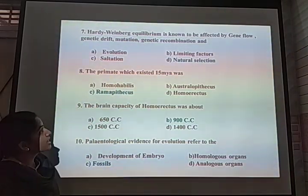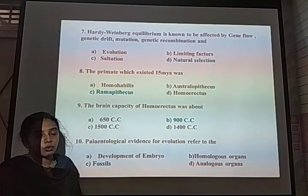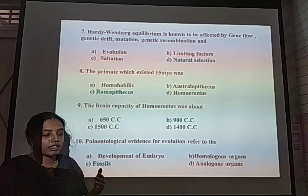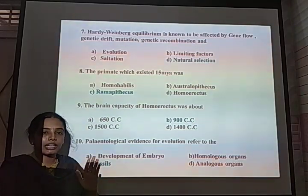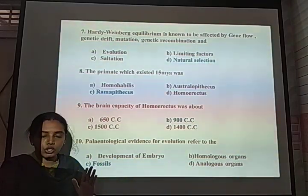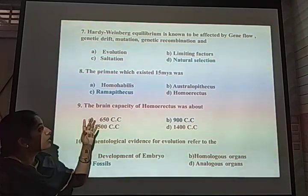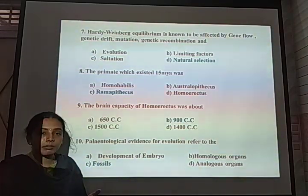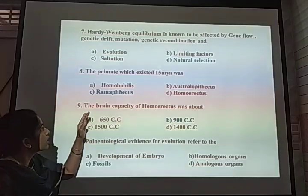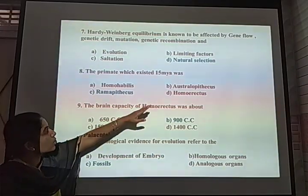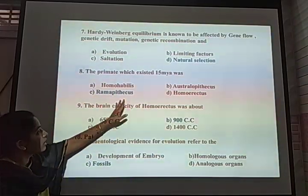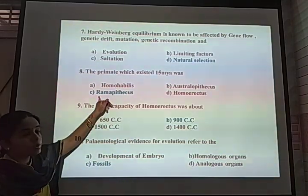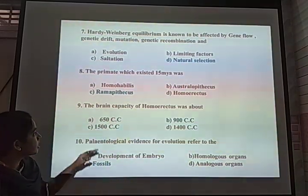Next MCQ: Which primate existed 15 million years ago? A primate is an organism with an upright posture in the human lineage. 15 million years ago, the two individuals present were Ramapithecus and Dryopithecus. The given options are Homo habilis, Australopithecus, Ramapithecus, and Homo erectus. The correct answer is option C, Ramapithecus.